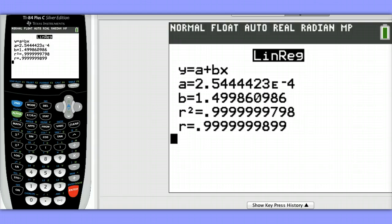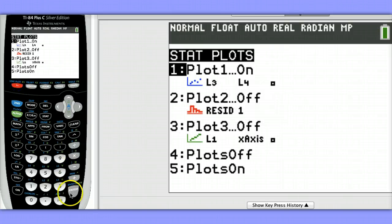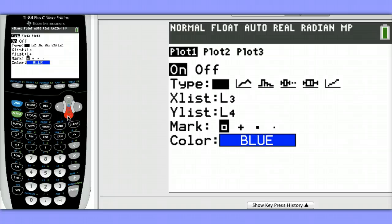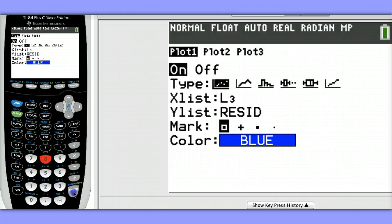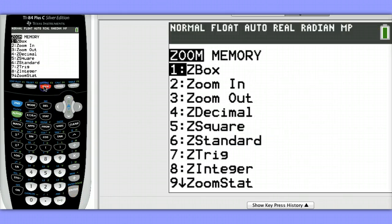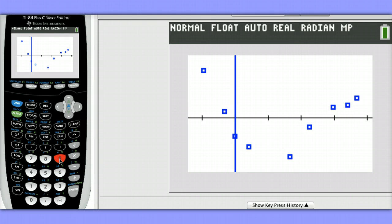Next, let's take a look at a scatter plot of the residuals. When you do a linear regression, the residuals are automatically calculated for you and stored in a list called Resid. Let's hit 2nd, Y equals to access our stat plot. We'll keep our X list as List 3, but let's change our Y list to the list of residuals. To get that list, hit 2nd, Stat, and choose Option 8 for residuals. Hit Enter, and choose Zoom, Zoom Stat. We can see that our residuals have random scatter.